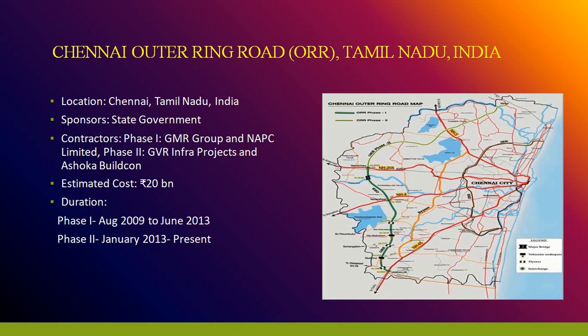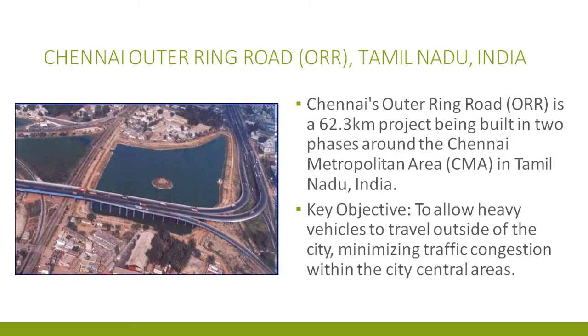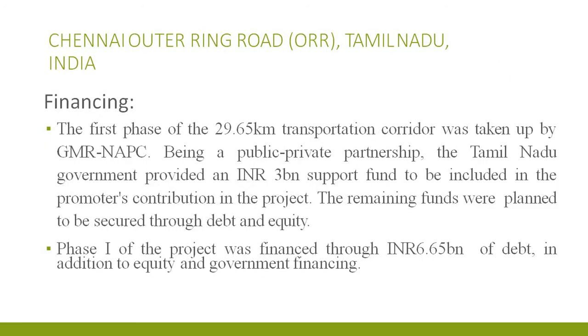Another successful project is the Chennai Outer Ring Road, located in Chennai, Tamil Nadu, with state government sponsorship. Phase 1 was constructed by GMR Group and NAPC Limited, and Phase 2 by GVR Infrastructure and Ashoka Buildcon. The estimated investment is ₹20 billion. Phase 1 ran from August 2009 to June 2013, and Phase 2 from January 2013 to present. This is a 62.3-kilometer project built in two phases, with the first phase of 29.65 kilometers undertaken by GMR and the next phase by GVR Infrastructure.